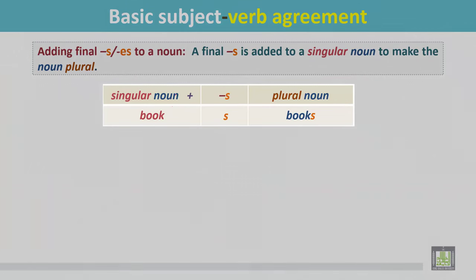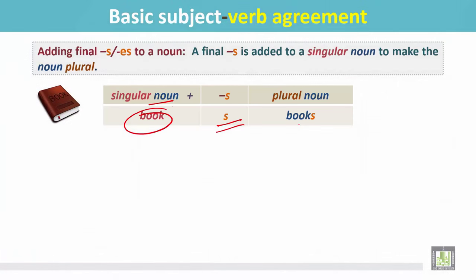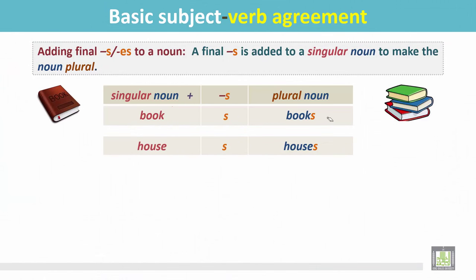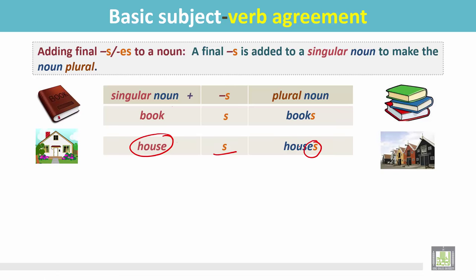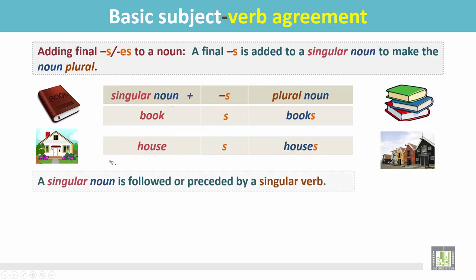In this table we see a singular noun: 'book.' Usually we add S to make the noun plural, like this: 'books.' Another example: 'house' — it's a single house, and we add S to make it plural: 'houses.'